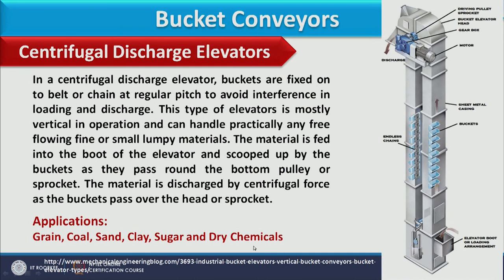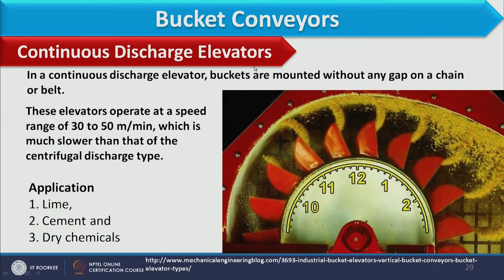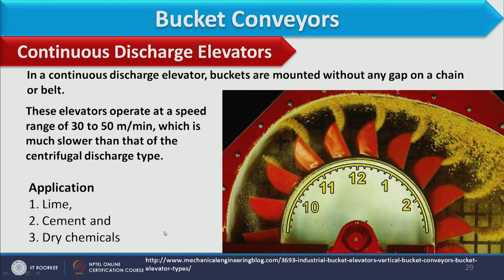In the continuous discharge elevator, buckets are mounted continuously—one after another without any gap—on a chain or belt, allowing material to be transferred continuously. These elevators operate at a speed range of 30 to 50 meters per minute, which is much lower than the centrifugal discharge type. Applications include lime, cement, and dry chemical plants.